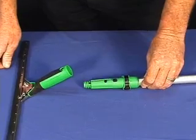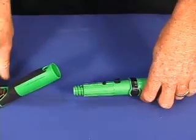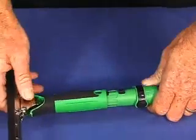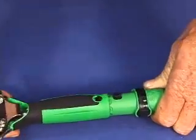This is the Unger locking cone on all their poles. What you do is you place the squeegee here and you push it until it clicks on like this.